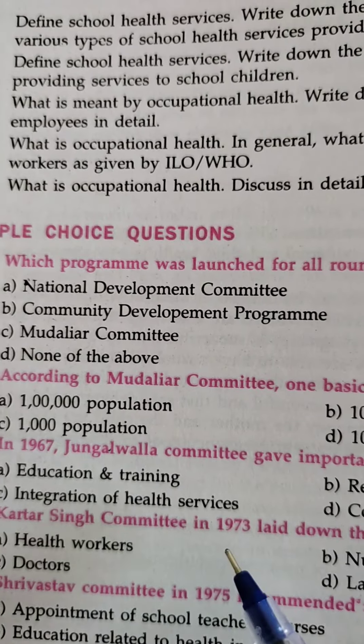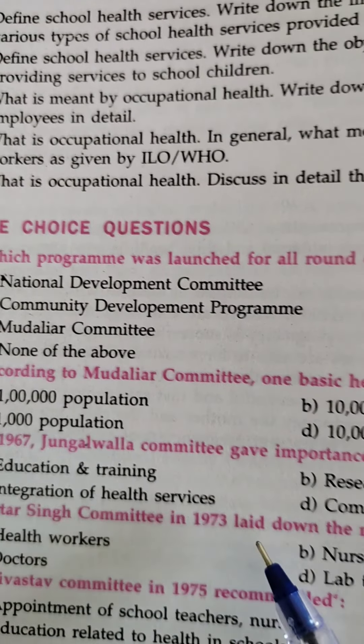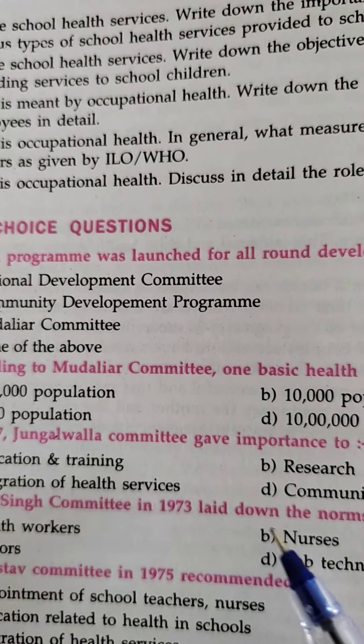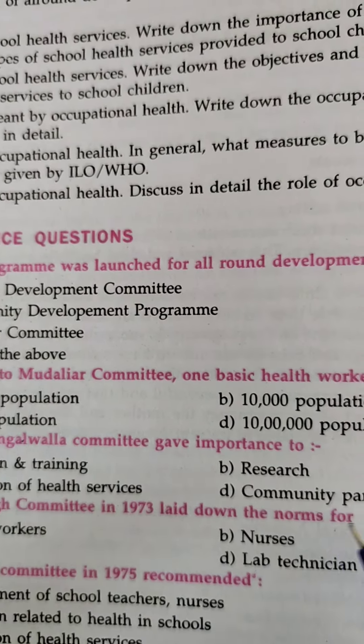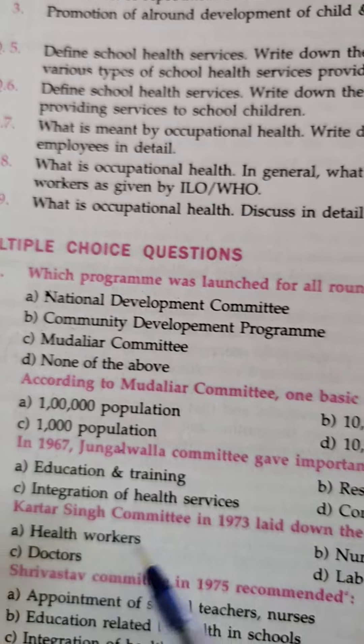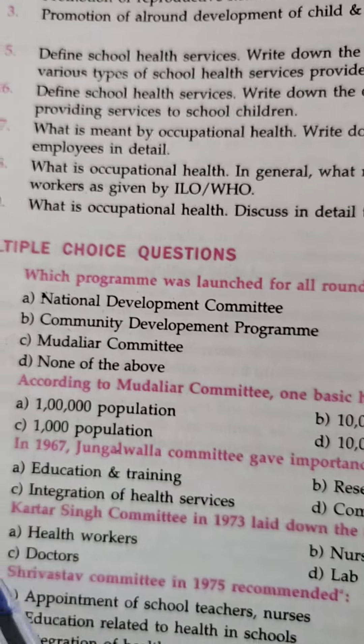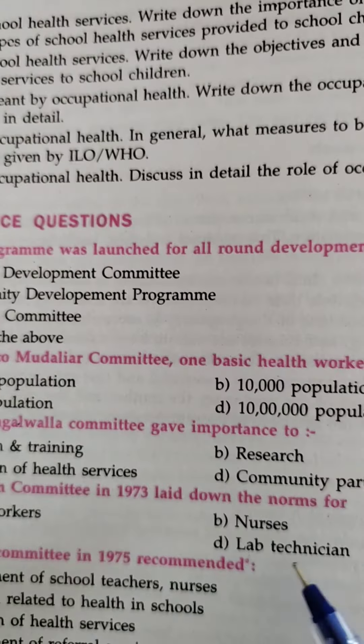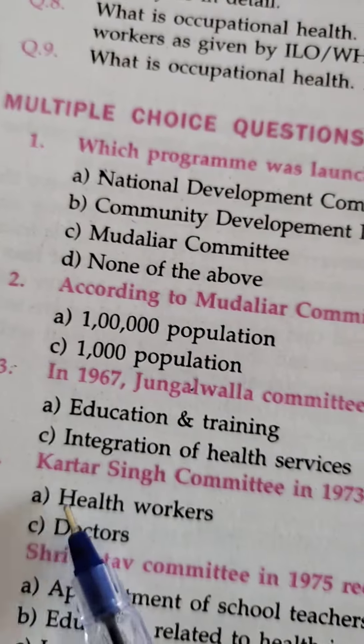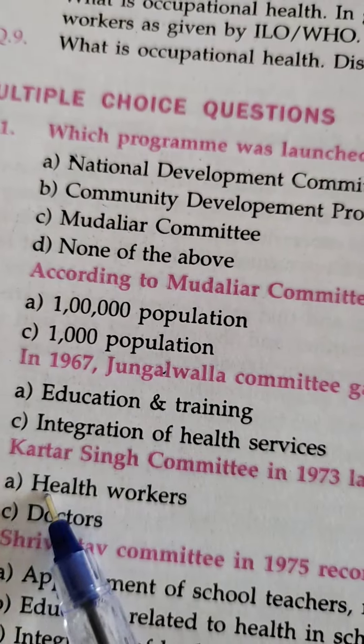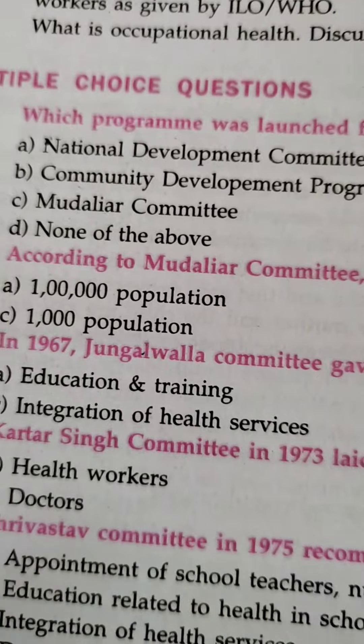The Kartashen Committee in 1973 laid down norms for health workers, nurses, doctors, and lab technicians. The answer is: 2,000 population per health worker.